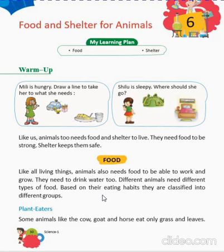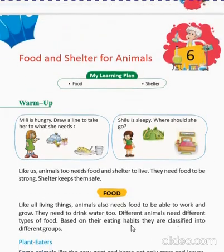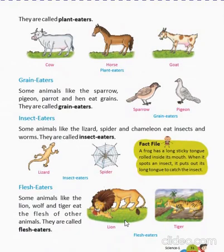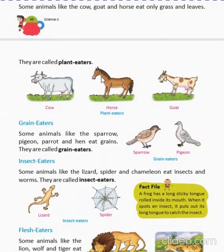Plant eaters are those animals who eat only grass and leaves, like cow, goat, and horse. These are plant eaters. Cow, horse, and goat — these are plant eaters' animals.